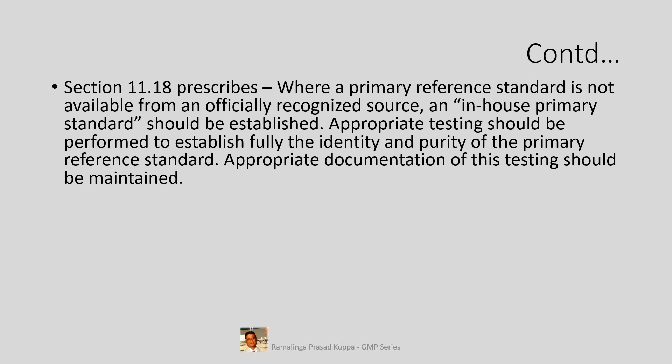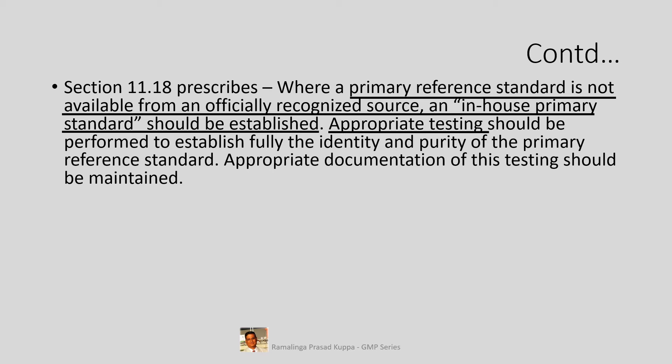Section 11.18 prescribes that where a primary reference standard is not available from an officially recognized source, an in-house primary standard should be established. Appropriate testing should be performed to establish fully the identity and purity of the primary reference standard, and appropriate documentation of this testing should be maintained. When there is no primary standard available from any of the official sites, it is necessary to have an in-house primary standard prepared. A primary standard is a fully characterized and qualified substance. The characterization of a chemical compound is established for its chemical structure, how the functional groups are arranged, its molecular weight, and information on elements like carbon, nitrogen, and hydrogen.